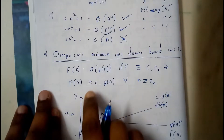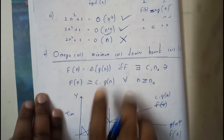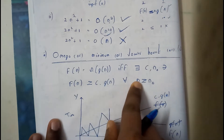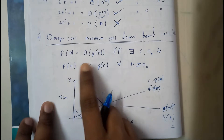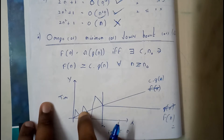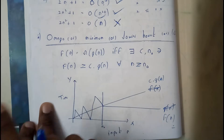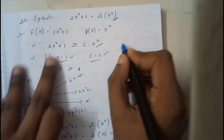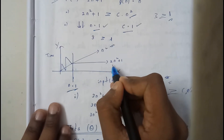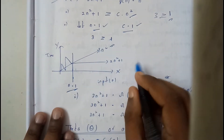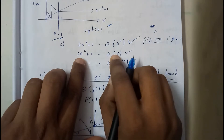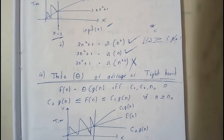Now let us go through Omega. There is no major change between Big O and Omega — they are similar, but with one small condition change: in Big O, f(n) is less; in Omega, g(n) is less. The condition is: f(n) = Ω(g(n)) if and only if f(n) ≥ c·g(n) for all n ≥ n₀. In the graph, c·g(n) is below and f(n) is above. Taking the same problem, substituting n = 1 gives 3 ≥ 1, so c = 1 and n₀ = 1.